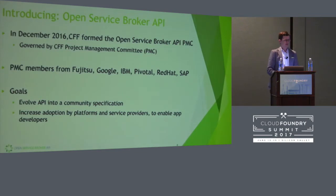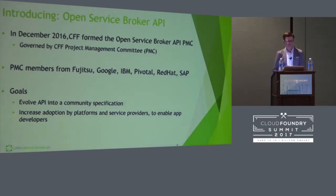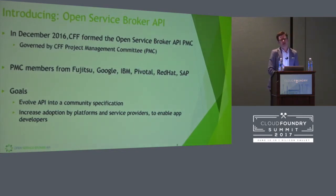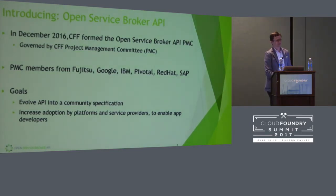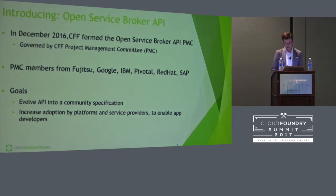The members of the PMC are represented by Fujitsu, Google, IBM, Pivotal, Red Hat, and SAP, representing Cloud Foundry, Kubernetes, and other platforms. The API spec for the broker API has been moved from a Cloud Foundry repo to a new GitHub organization for the project. Goals for this working group include evolving the API into a cross-platform community specification and increasing adoption by platforms and service providers to ultimately increase choice available to application developers.